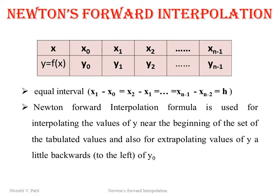Newton's forward interpolation formula is used for interpolating values of y near the beginning of the set of tabulated values. It can also be used if the values of y are slightly to the left of y0. We use Newton's forward difference table to find values nearer to the start of the table. For values at the end of the table, we use Newton's backward interpolation formula. For values at the central position, Newton's central forward difference interpolation method is used.